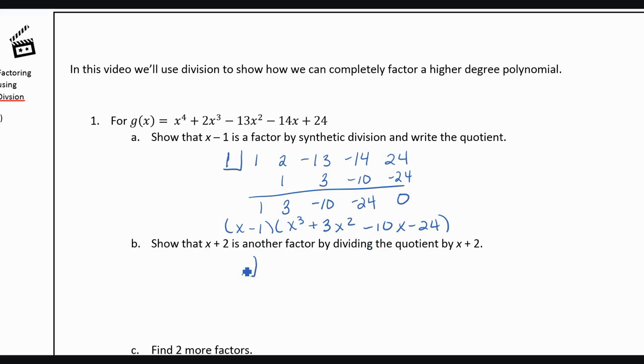So we're going to do synthetic division, we'll put negative 2 in the box. 1, 3, negative 10, negative 24. So bring down the 1. 1 times negative 2 is negative 2. We've got 1, negative 2, negative 12, 24, and 0.